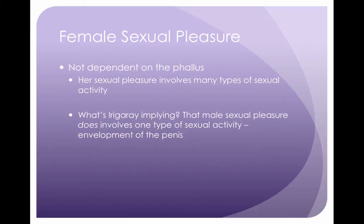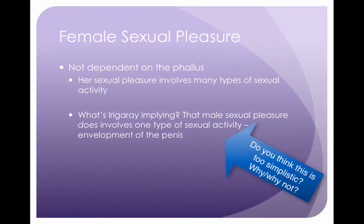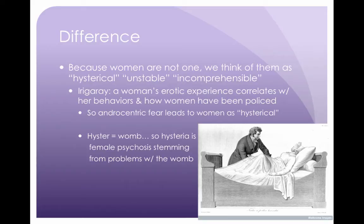So what's going on with a woman's sexual pleasure? It's not dependent on the phallus, according to Irigaray. Her sexual pleasure doesn't involve just one type of sexual activity. She's kind of implying that male pleasure does involve one type of activity — having the penis enveloped by something in some way. Now, because a woman is not one, it makes sense that she's considered hysterical, unstable, or incomprehensible — because she's a multiplicity. So there's something about the erotic experience of a woman with her own genitalia that correlates with her behavior and how it's been policed historically. Because she's autoerotic and her genitalia is complex, the androcentric fear of this leads to the ways we classify women as hysterical.